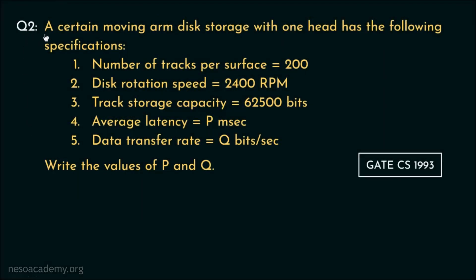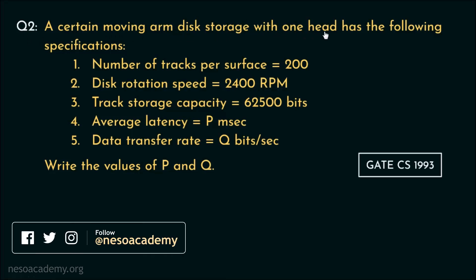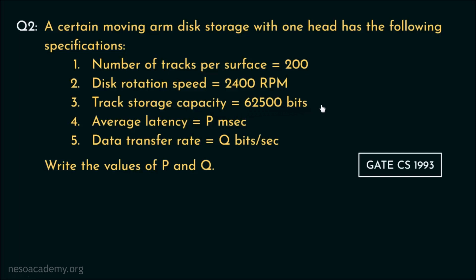Now let's move on to the second question. Consider a moving arm disk storage with one head — basically a hard disk drive — with the following specifications: the number of tracks per surface is 200, the disk rotation speed is 2400 RPM, the track storage capacity is 62500 bits. The average latency, that is the average rotational delay, is p milliseconds, and the data transfer rate is q bits per second. We need to write the values of p and q.